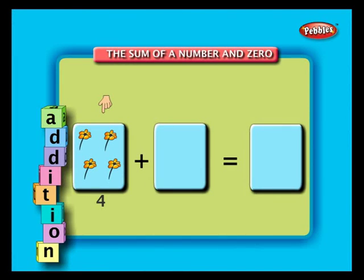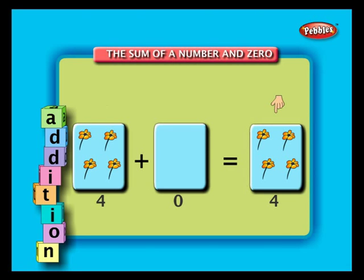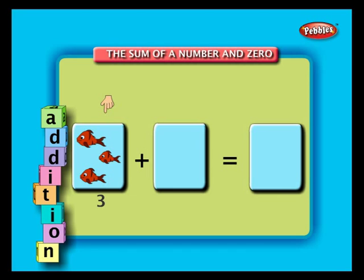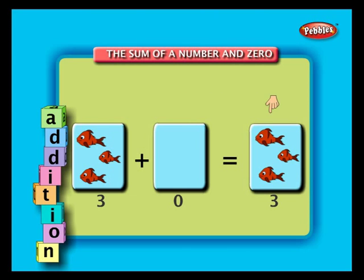The sum of a number and zero. There are four flowers in the first box and zero flowers in the second box. When we add four plus zero, we get four only. So zero added to any number will give the number itself. Here there are three fishes in the first box and zero fishes in the second box. When we add three plus zero, we get three as the answer.